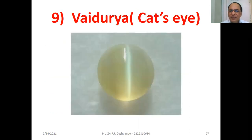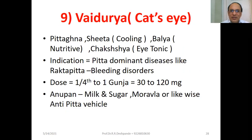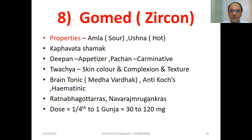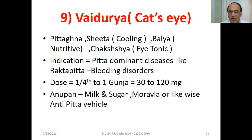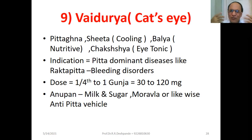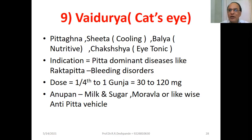Ninth Ratna: Vaiduriya (Cat's Eye). Properties: cooling (Pitagana). Most Ratnas are cooling in nature; only Gomed was slightly hot. It is Sheetha and Balya. Chakshushya — eye tonic. For repeated screen time with computer, laptop, mobile, or television causing asthenopia — burning, tired eyes with excessive secretions — you can use Vaiduriya. Indication: Pitta-dominant diseases like Raktapitta (bleeding disorders). Dose: one-fourth to one Gunja, 30 to 120 mg. Anupan: milk and sugar, morala, or likewise anti-Pitta vehicle.